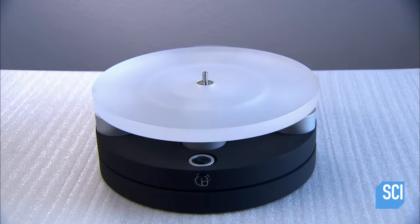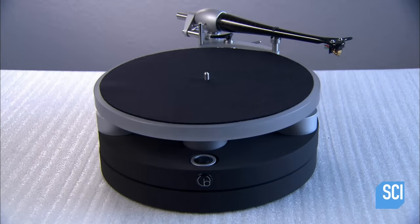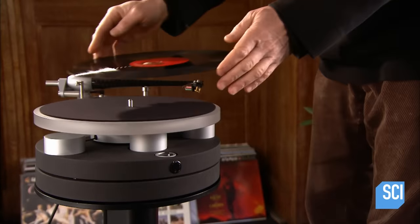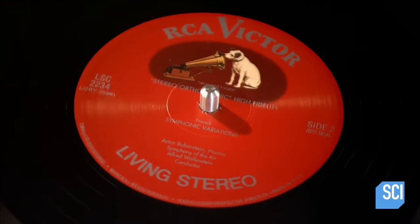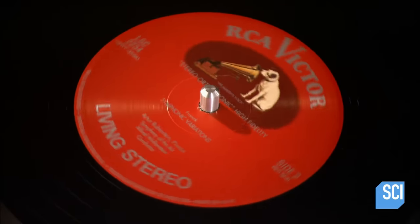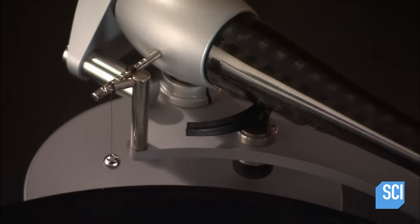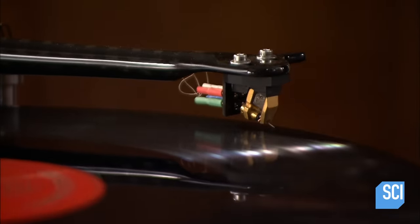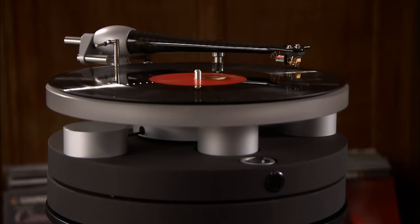They now install the acrylic platter, felt mat, and tonearm. With this turntable now fully assembled, it's time for the vinyl test. The record spins and the stylus traces the grooves. The analog sound fills the room. Proving this technology stands the test of time.